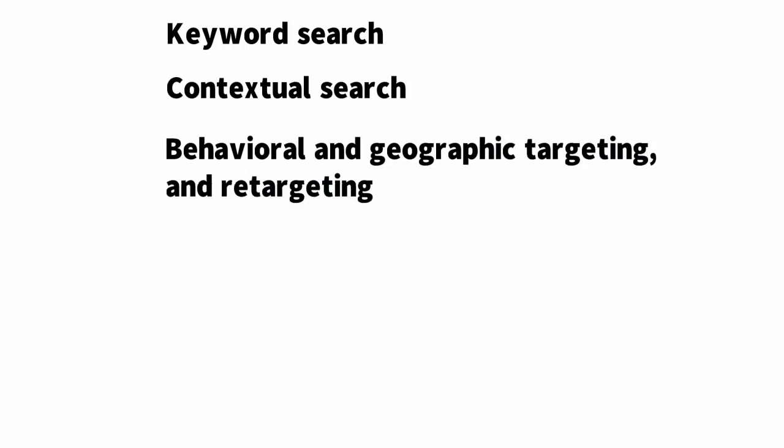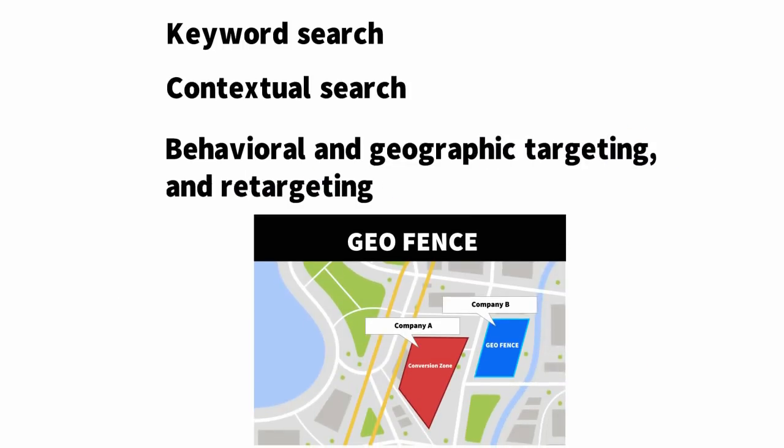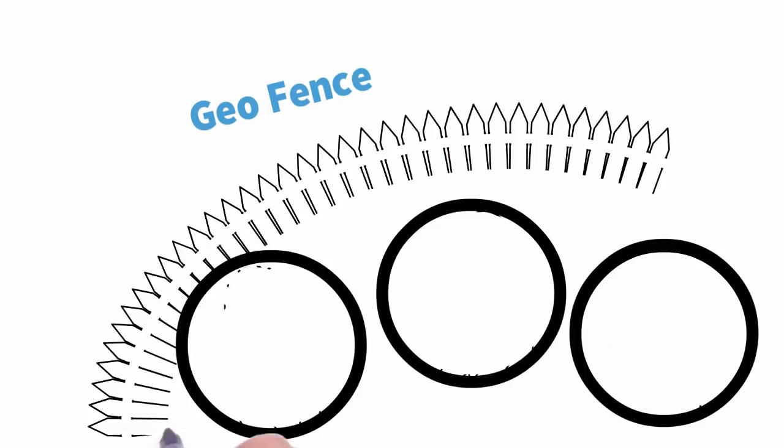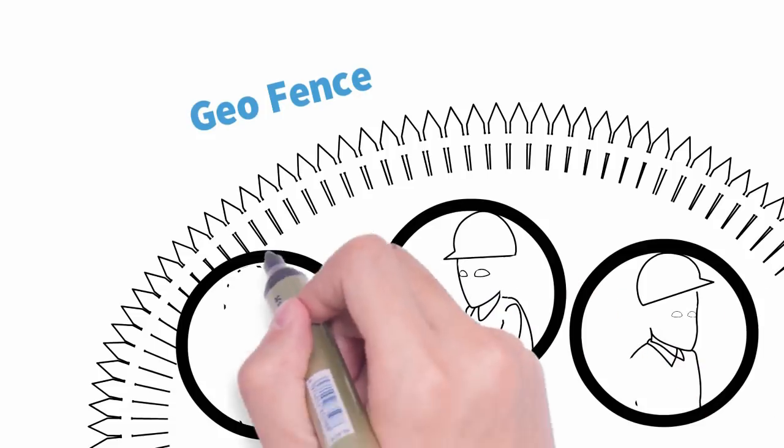But there's one thing that lets us stand out from the crowd, and that's the geofence. In essence, we draw an invisible fence around a real-world map location, targeting employees within its boundaries.